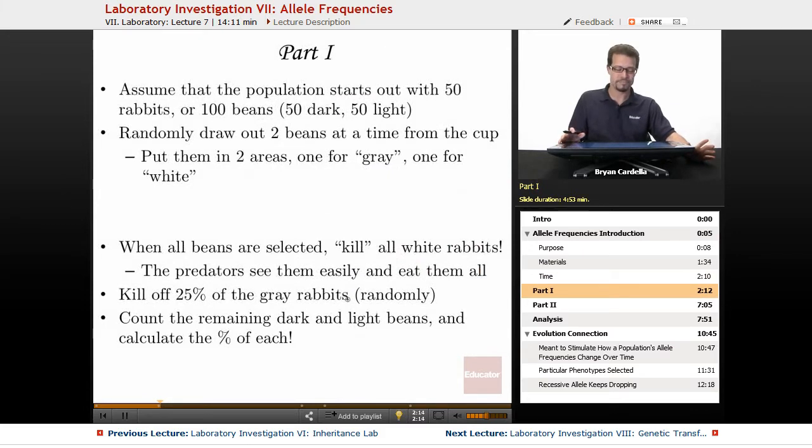Alright, part one. Assume that the population starts out with 50 rabbits or 100 beans. So we're going to assume that there's an equal frequency of the dominant and recessive. So the frequency of the dominant allele is 0.5 or 50 percent for dominant A and it's also 0.5 or 50 percent for recessive and that equals 1, also known as 100 percent of the alleles.